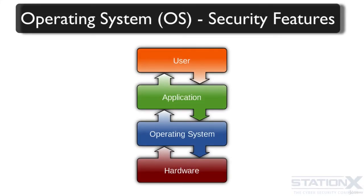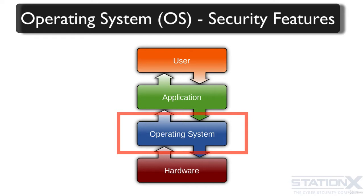We are now going to talk about operating systems in relation to security. An operating system, or OS, is system software that manages computer hardware and software resources and provides common services for computer applications. The operating system is the main software on a computer that controls all the applications.